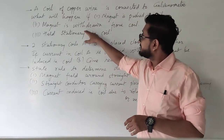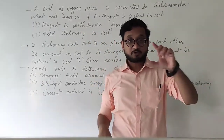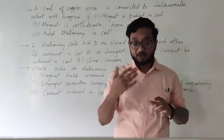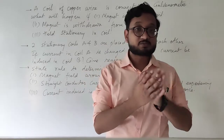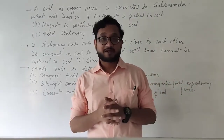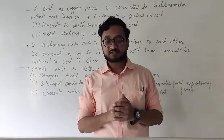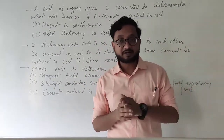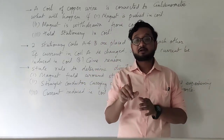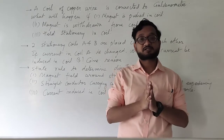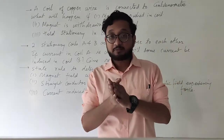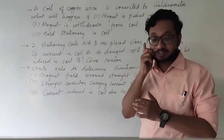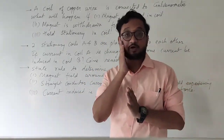If the magnet is withdrawn from the coil, the magnetic field is moving along with the magnet around the coil. You will see a deflection in the galvanometer again, but because the magnet is moving in the other direction, the magnetic field is also moving in the other direction. So the deflection will be in the opposite direction, meaning current is generated but in the opposite direction.